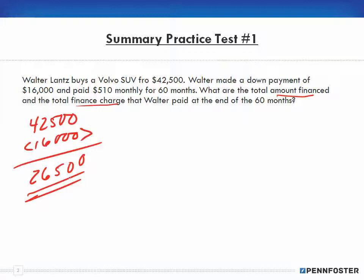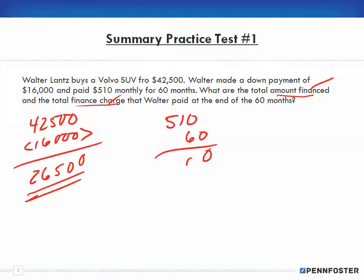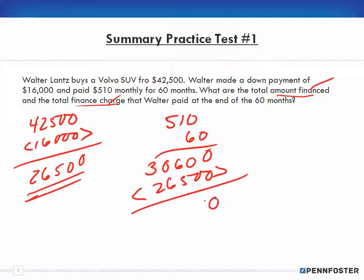So he's financing twenty-six thousand five hundred — that's the total amount financed. The finance charge is the difference between the total amount asked to pay less the amount that's financed. He pays five hundred and ten dollars for sixty months, so the total amount he pays is thirty thousand six hundred dollars. The amount financed was twenty-six thousand five hundred, so the finance charge is four thousand one hundred dollars.